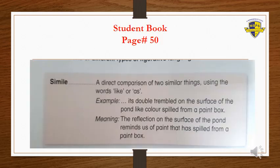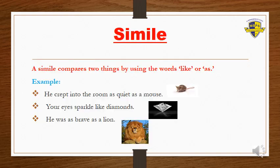Turn to page number 50. We will read the definition of a simile. A simile is a direct comparison of two similar things using the words 'like' or 'as.' For example: 'It rippled and trembled on the surface of the pond like color spilled from a paint box.' This means the reflection on the surface of the pond reminds us of paint spilled from a paint box.